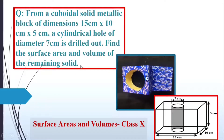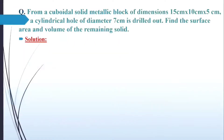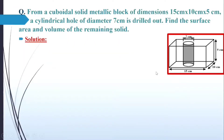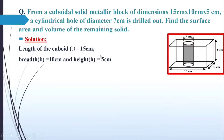This is a quite simple question. Let us see how it is to be done. If I try to represent the figure diagrammatically, I have a cuboid with length L equal to 15 cm, breadth B equal to 10 cm, and height H equal to 5 cm. From this, I have drilled out a cylindrical hole.